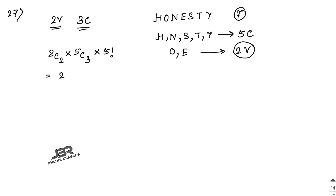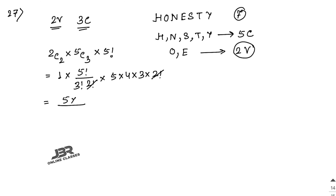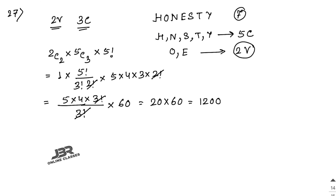2C2 = 1. And 5C3 = 5!/(3! × 2!) = (5 × 4 × 3!) / (3! × 2) = (5 × 4)/2 = 10. Then 5 factorial = 5 × 4 × 3 × 2 × 1 = 120. So 3 factorial cancels, giving 5 × 4 = 20, and 20 × 3 = 60. Then 1 × 60 × 20 = 1200, so the answer is 1200.